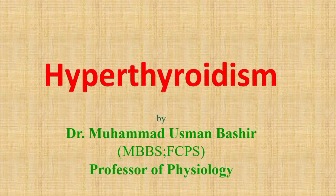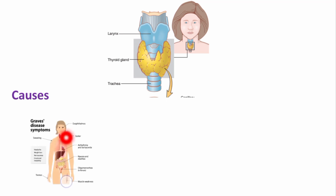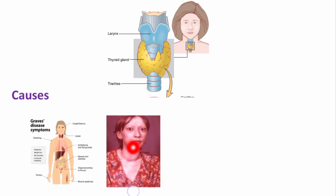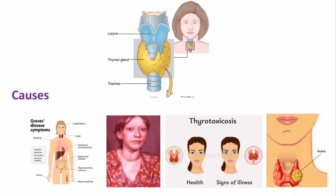Assalamu alaikum dear viewers, I am Professor Dr. Muhammad Usman and in this video we will learn about hyperthyroidism. Hyperthyroidism is one of the most common disorders of the thyroid gland. In hyperthyroidism there is increased, or more than normal, secretion of thyroid hormones T3 and T4. The most common causes include Graves' disease, toxic goiter, thyrotoxicosis, and thyroid adenoma.